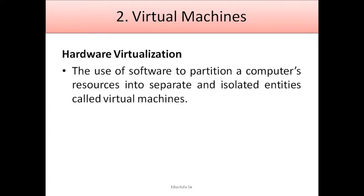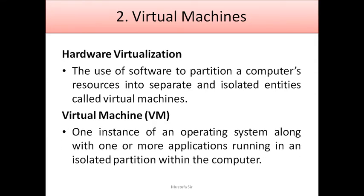One effective strategy for dealing with this problem is hardware virtualization. Virtualization technology enables a single PC or server to simultaneously run multiple operating systems or multiple sessions of a single OS. A machine running virtualization software can host numerous applications, including those that run different OS, on a single hardware platform. Hardware virtualization is the use of software to partition computer resources into separate and isolated entities called virtual machines — one instance of an OS along with one or more applications running in an isolated partition. Virtual machine is not a new technology; during the 1970s, IBM mainframe systems offered the first capability allowing programs to use only a portion of a system's resources.